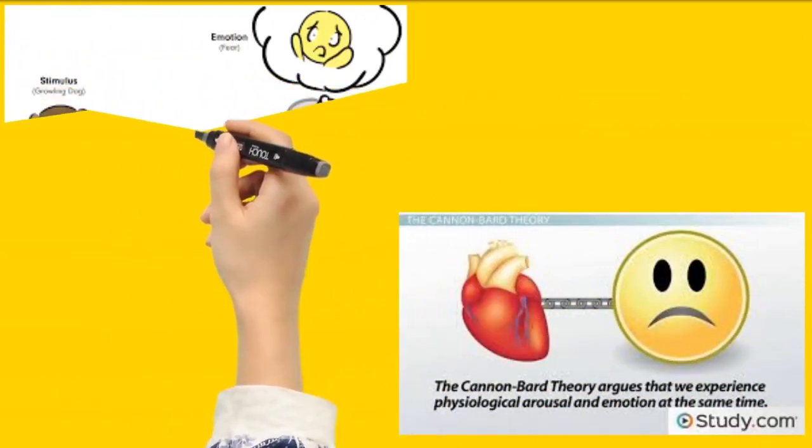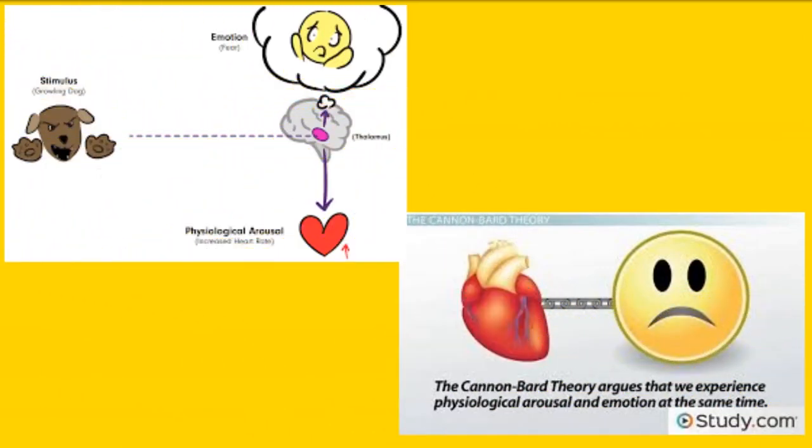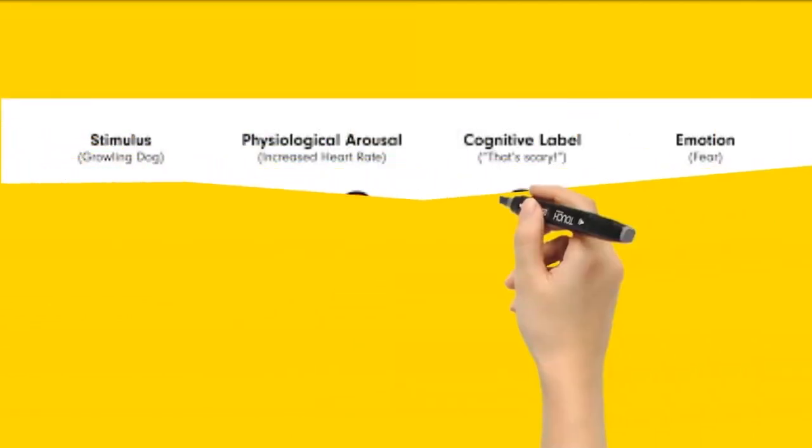Two, the Cannon-Bard theory of emotion states that stimulating events trigger feelings and physical reactions that occur at the same time. Cannon-Bard proposes that both of these reactions originate simultaneously in the thalamus.